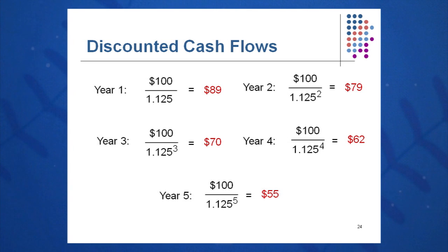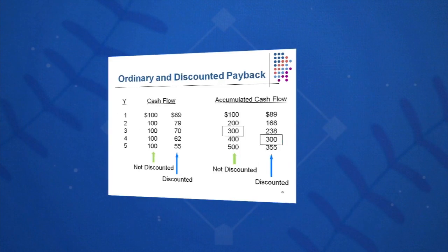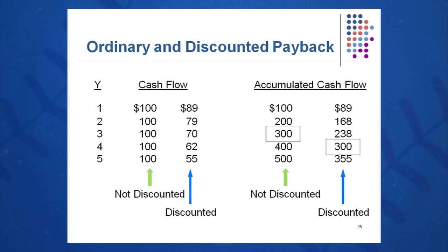The first $100 is worth $89, the second $100 is worth $79, the third $100 is worth $70, the fourth $100 is worth $62, and the fifth $100 is worth $55. From this chart we can see that regular payback is three years, but it will be four years for her to recapture her $300 under discounted payback — it takes a little bit longer.